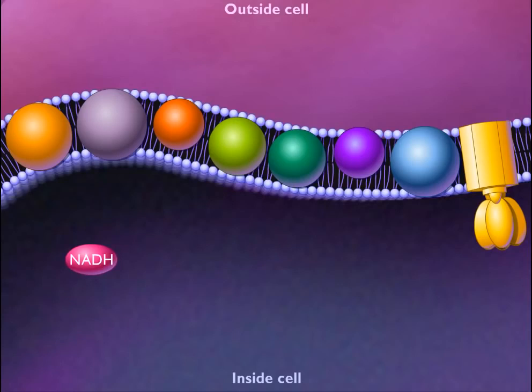These coenzymes transfer hydrogens to the electron transport chain, which is located in the bacterial cell membrane. A hydrogen consists of a proton and an electron.